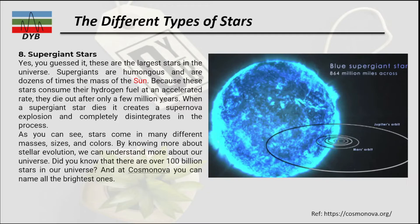Did you know there are over 100 billion stars in our universe? Here is a size comparison of a blue supergiant star — you can see it is enormously large. Our entire solar system, including the orbit of Jupiter, fits within it. You can assume this star is billions of times larger than the Sun.